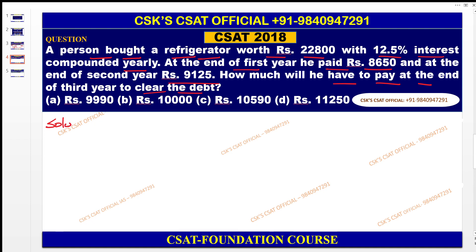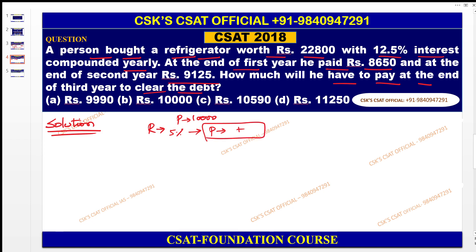Before that you need to know the difference between simple interest and compound interest. Simple interest means the interest is calculated only on the principal every year. For example, if the principal is 10,000 at 5 percent, every year you pay 5 percent interest only on the principal — that is simple interest.